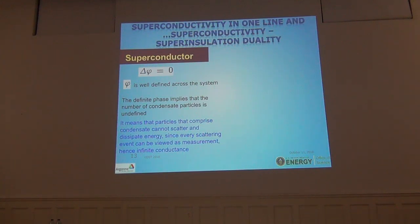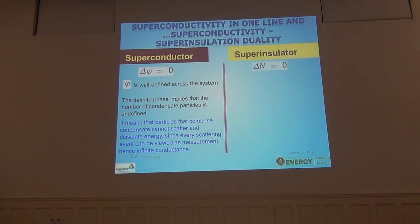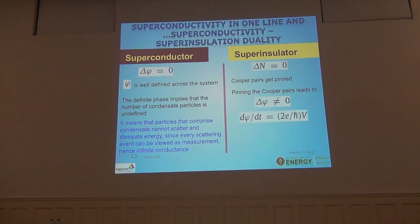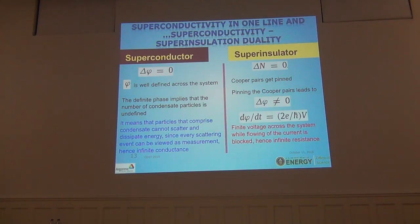This completes the theory of superconductivity — the rest can be given to a first or second year student to derive all the consequences. By the same token, if we manage to pin all the particles, then we immediately know we should have indefinite uncertainty in the phase, and by the Josephson relation this means the system should have a finite voltage in the absence of current. The only natural name for this phase is superinsulator — it has infinite resistance at finite temperature.